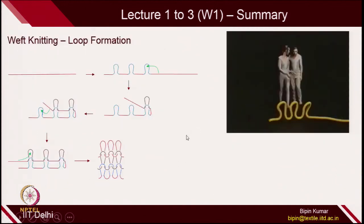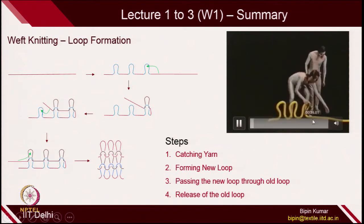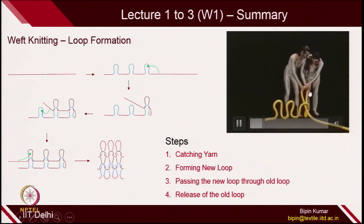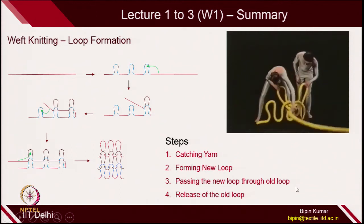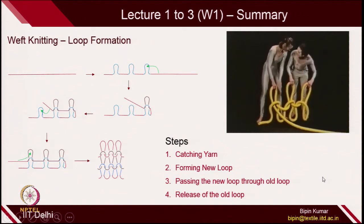I also gave you an indication of how we make a knit fabric structure. We start from a single yarn, then we create loops, and then we start making new loops individually and adding to each of these columns one by one. In the video you can see: we first created a series of loops, then you catch new yarn, make a new loop, and pass through the old loop. You catch new yarn, make a new loop, pass through the old loop — and the same process is repeated from the other side.